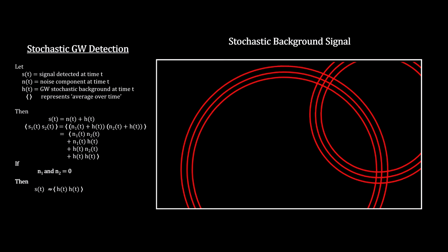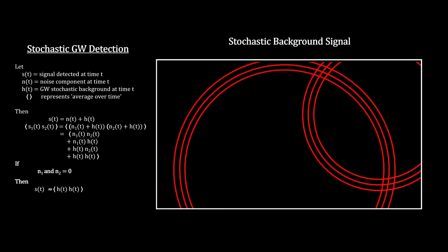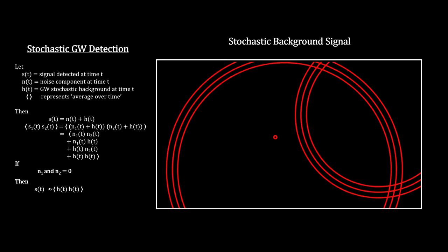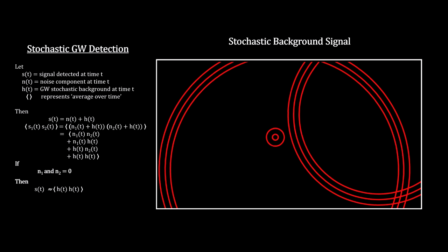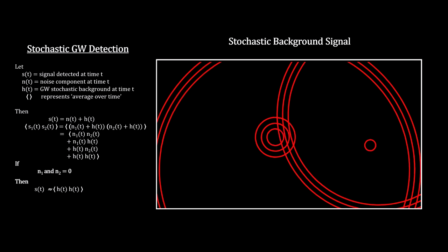In 2023, pulsar timing array groups collectively announced that they have uncovered the first evidence for low-frequency gravitational waves permeating the cosmos.